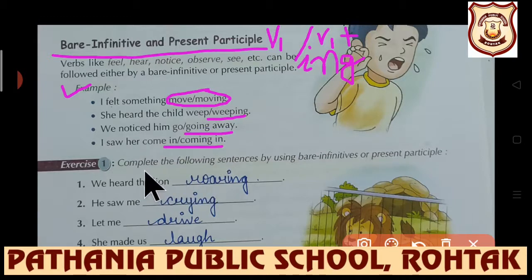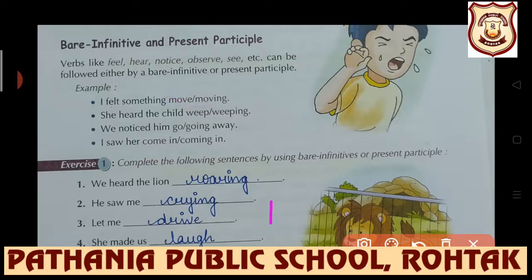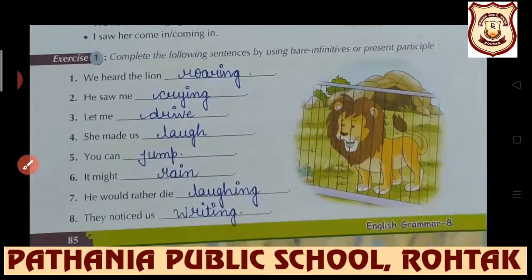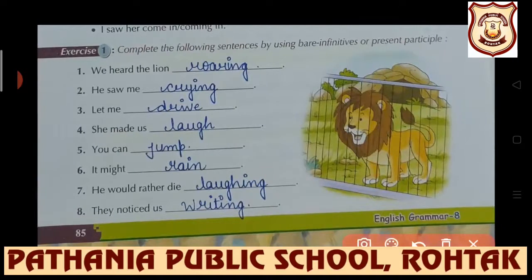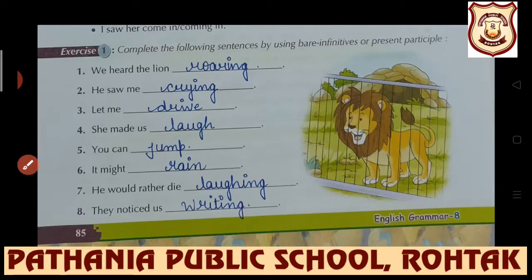Let's see Exercise 1: Complete the following sentences by using bare infinitives or present participle. Try to underline what you need to fill so you will not get confused. The more times you write the syntax, the easier it will be to understand. The correct answer for the first one: 'We heard the lion roaring' - the answer is 'roaring'. Another example: 'Let me drive.'